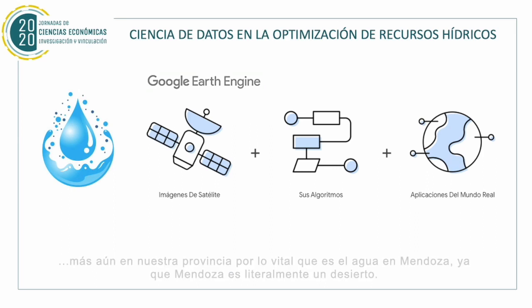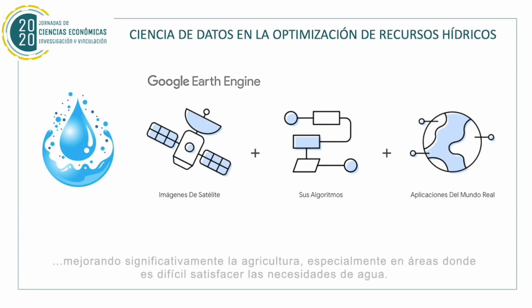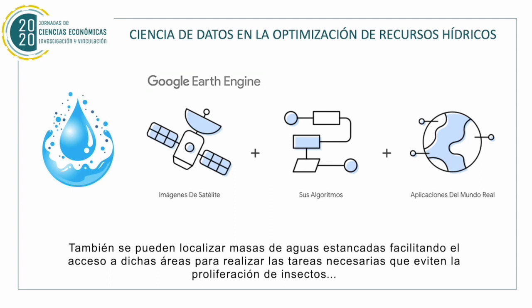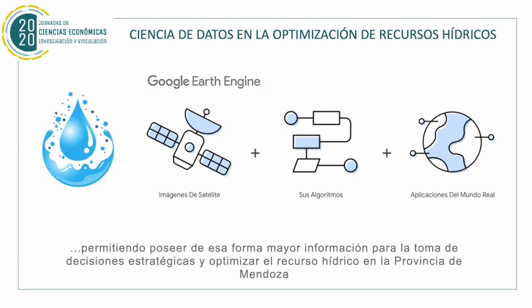especially in our province, given how vital water is in Mendoza, since Mendoza is literally a desert. Remote observation of Earth through remote sensing and the application of the NDWI index can, among other benefits, control the risk of the province in real time, improving agriculture significantly, especially in areas where it is difficult to satisfy the water needs. It can also locate masses of stored water, providing access to such areas to carry out the necessary work. The data gained by satellite sensors allows projecting the evolution of hydrographic variables,